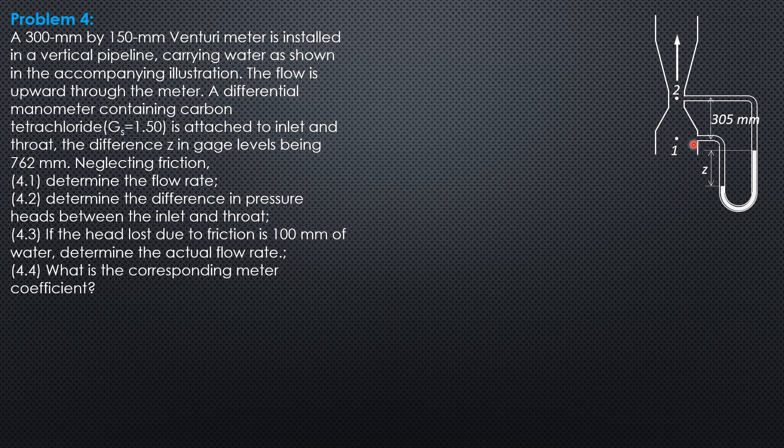So this is the given figure. Take note that the flow is upward and vertical. Therefore z1 is 0 and z2 is 0.305. We will call that y.